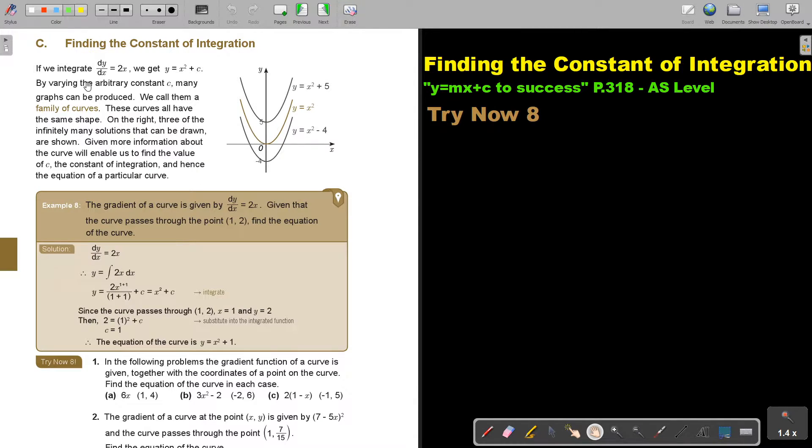By drawing the arbitrary constant c, many graphs can be produced. We call them a family of curves. These curves all have the same shape. On the right, three of the infinitely many solutions that can be drawn are shown. Given more information about the curve will enable us to find the value of c, the constant of integration.